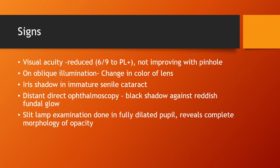Depending on the color of the nucleus — in grade 1, the lens is greenish; in grade 2, it is yellowish; in grade 3, it is amber; and in grade 4, it is brownish in color. Iris shadow in immature sclerotic cataract is present. In distant direct ophthalmoscopy, black shadow is seen against the red fundal glow. Slit-lamp examination done with fully dilated pupil reveals the complete morphology of the opacity.